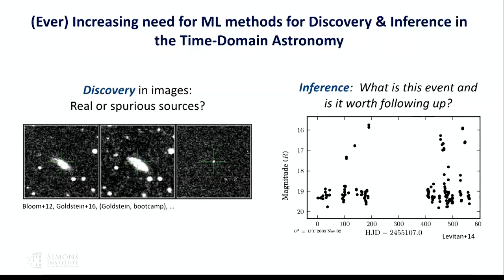This event is a great reason to recognize that we need to do discovery on images — are these real or spurious? That's an important question. And then we need to do inference. If you look at what we call a light curve in astronomy — brightness on the y-axis and time on the x-axis — the question is: is it worth spending time on this object, not just with the discovery instrument, but with follow-up facilities that are more sensitive, can look at different wavelengths, or take a spectrum to understand the chemical composition?